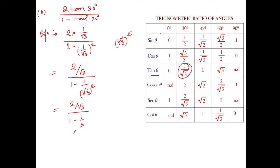Take the LCM of the denominator. So 2 by root 3 divided by, you can write the LCM as 3. And here it is 1 divided by 3, so 3 into 1 is 3, minus 1.